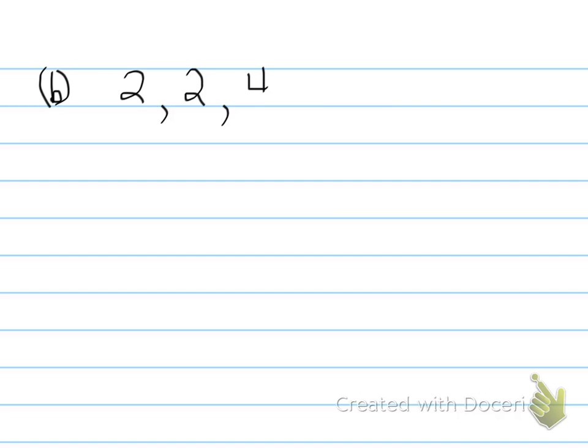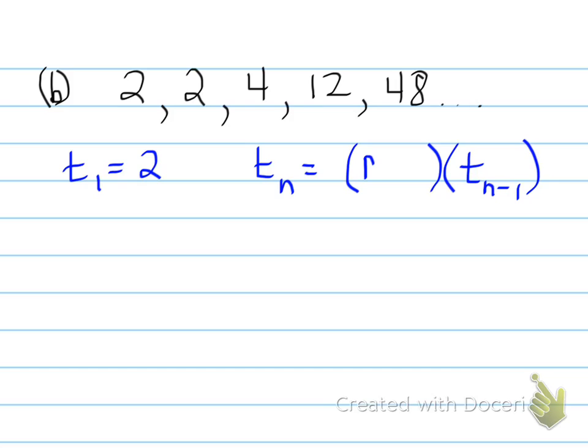Last one for this. You're given the sequence 2, 2, 4, 12, 48, and so on. What is going on here? Well, term 1 is equal to 2, and this nth term, any term value, is equal to the following equation. Why is that true?